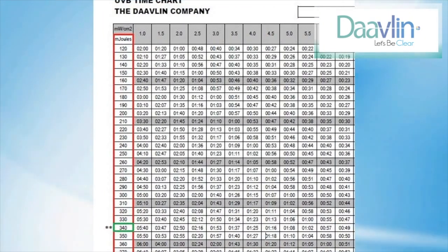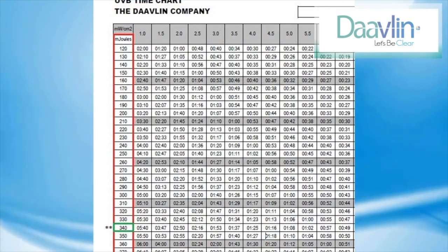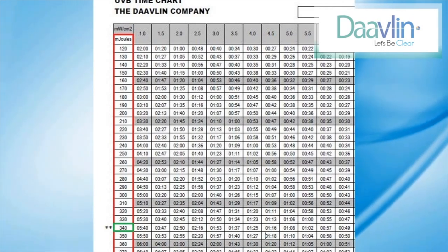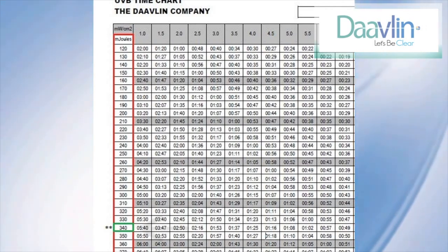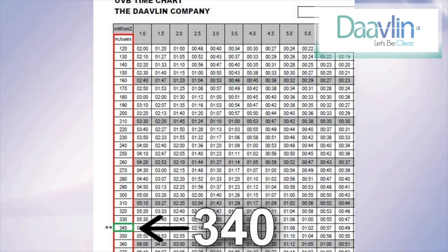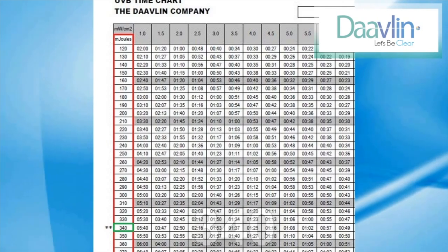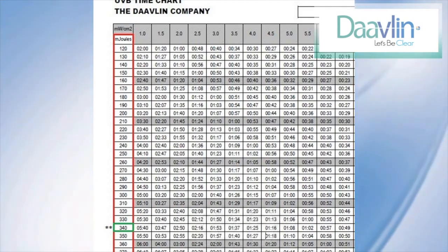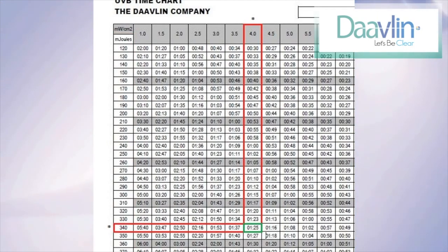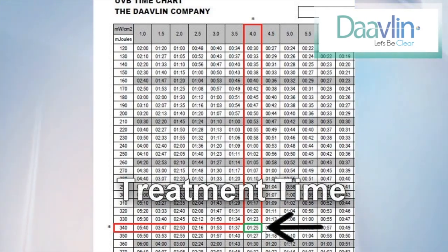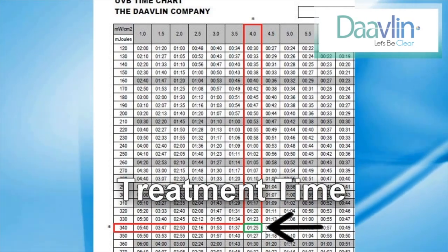Next, look at the column on the far left. Here you will find a wide range of potential doses. In our example, the prescribed dose is 340 millijoules, so we look at the column and find 340. Now, to calculate the treatment time, we need to find where the power output and the prescribed dosage intersect. This intersection will be the treatment time.